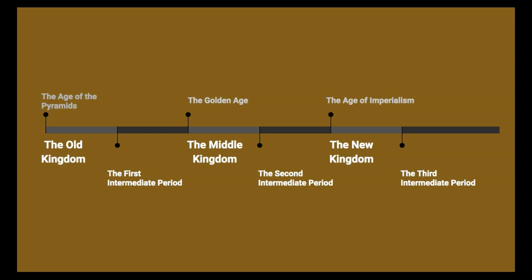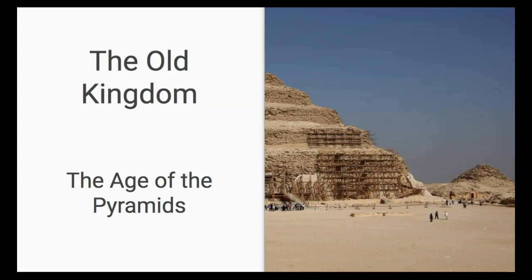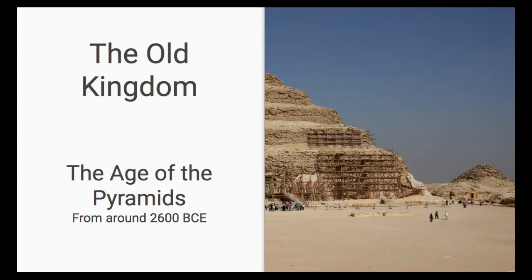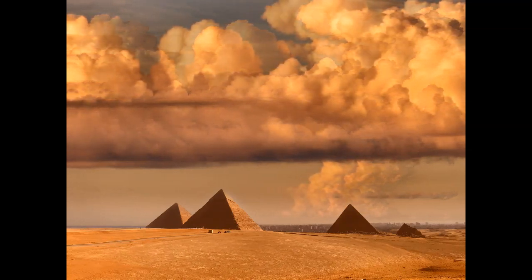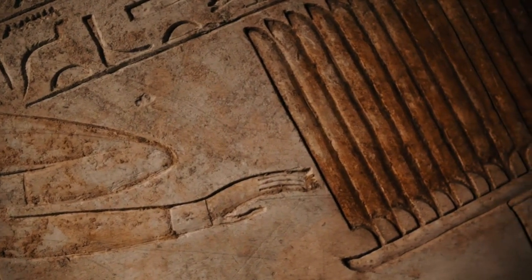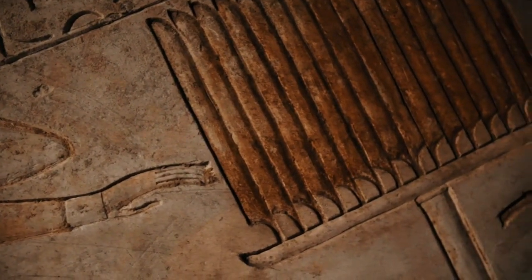Let's start with the Old Kingdom, which is remembered as the Age of the Pyramids. Before getting into details, note that these videos aim to give an overview of the topic — you can dive deeper through further research, and there are many resources on the Human History Project website linked in the description. The Old Kingdom began around 2600 BCE. This was when many pyramids were built, and ancient Egyptian art, society, culture, and religion — which was polytheistic — also developed during this period.